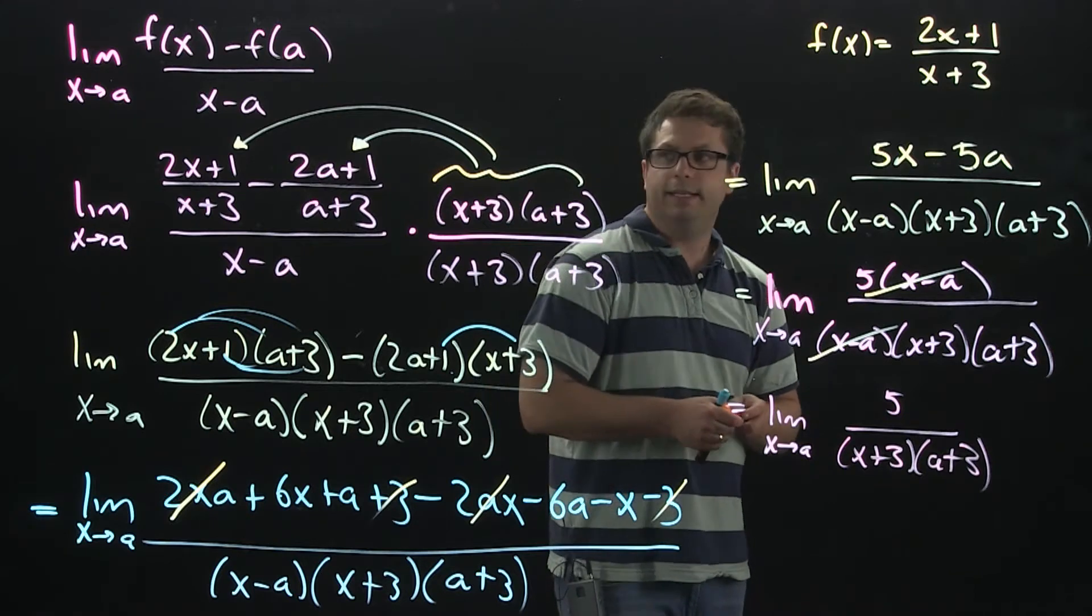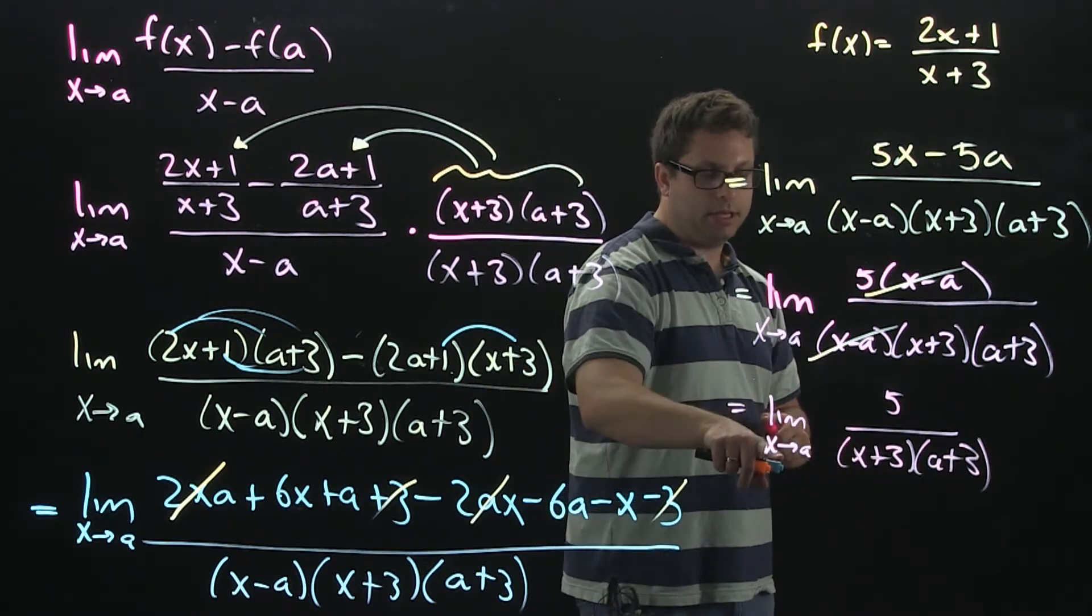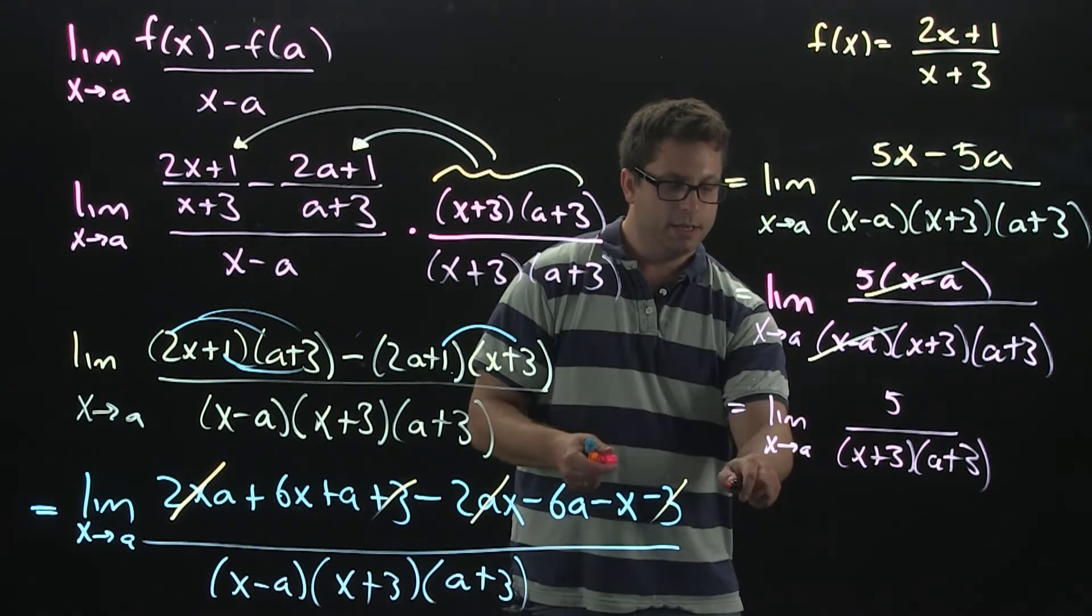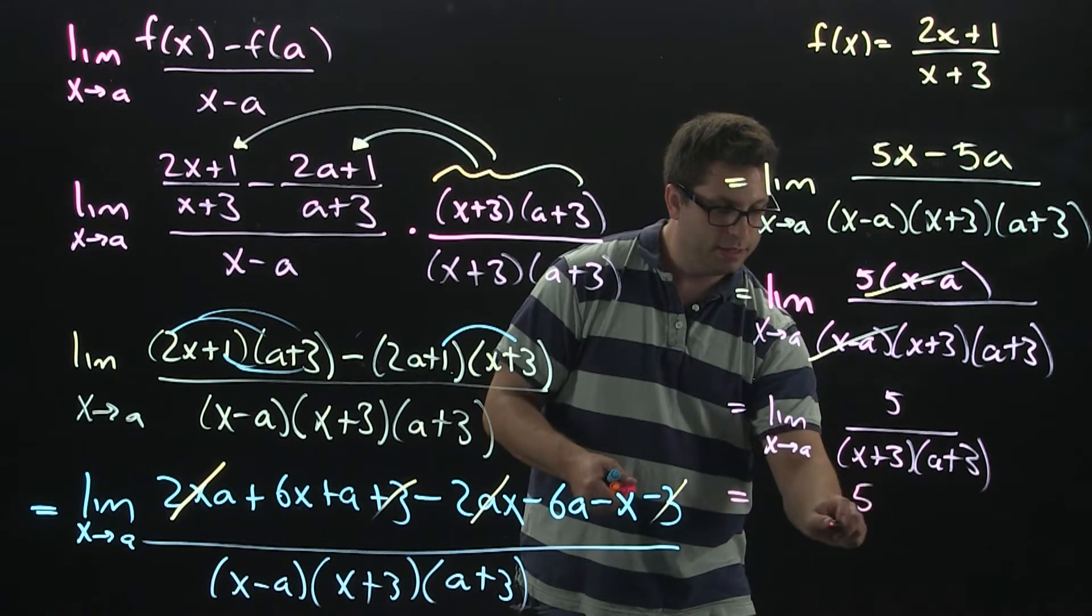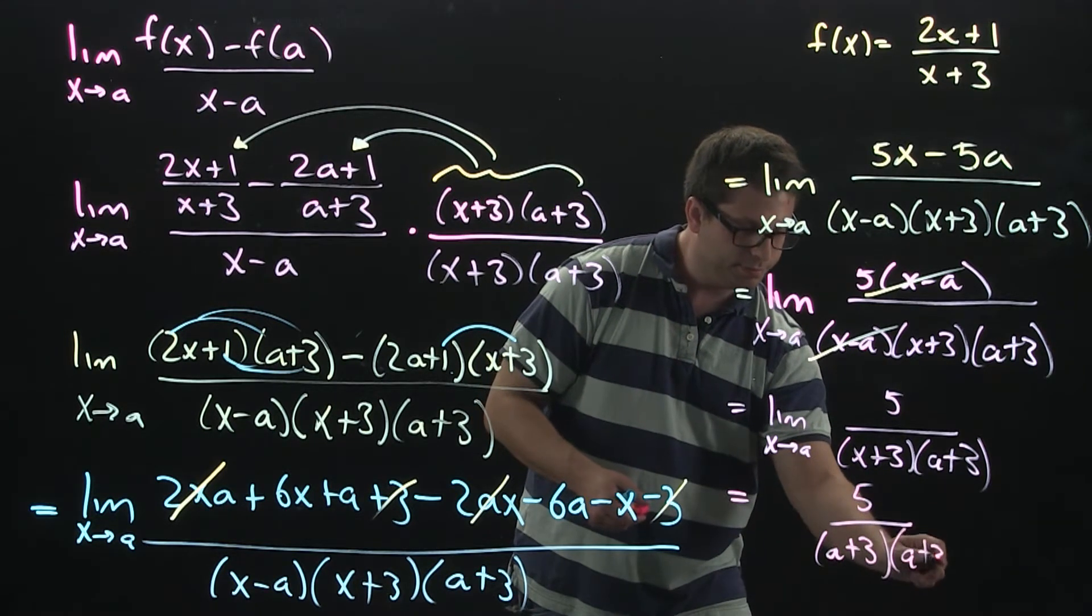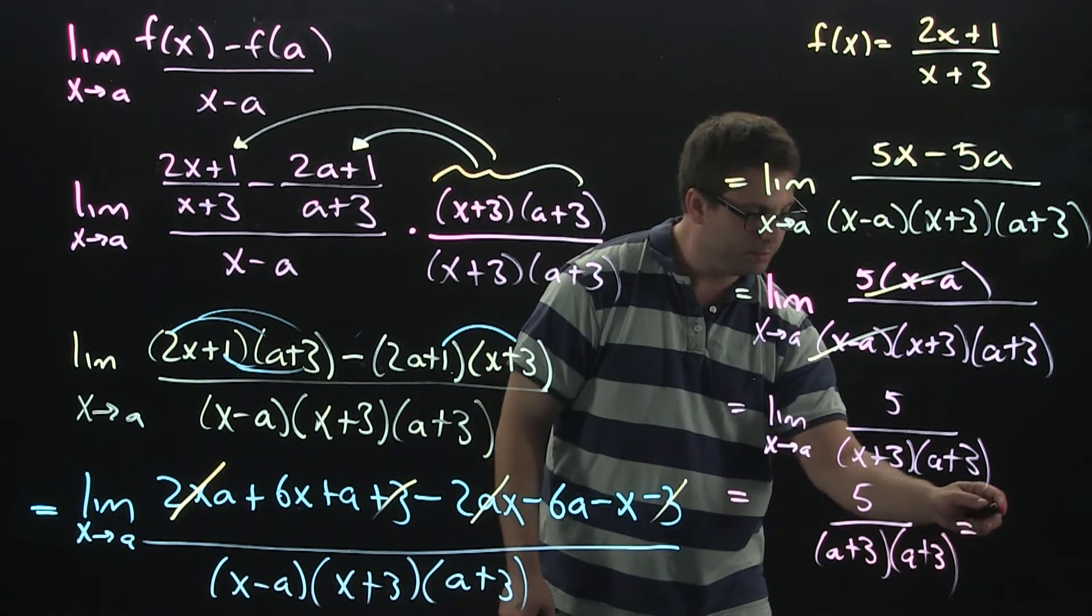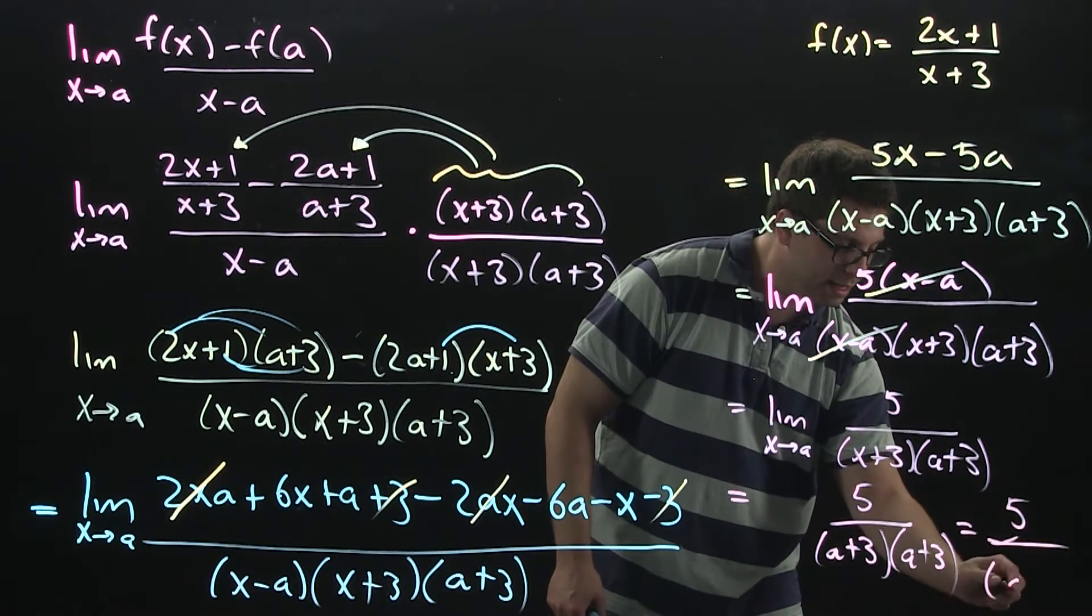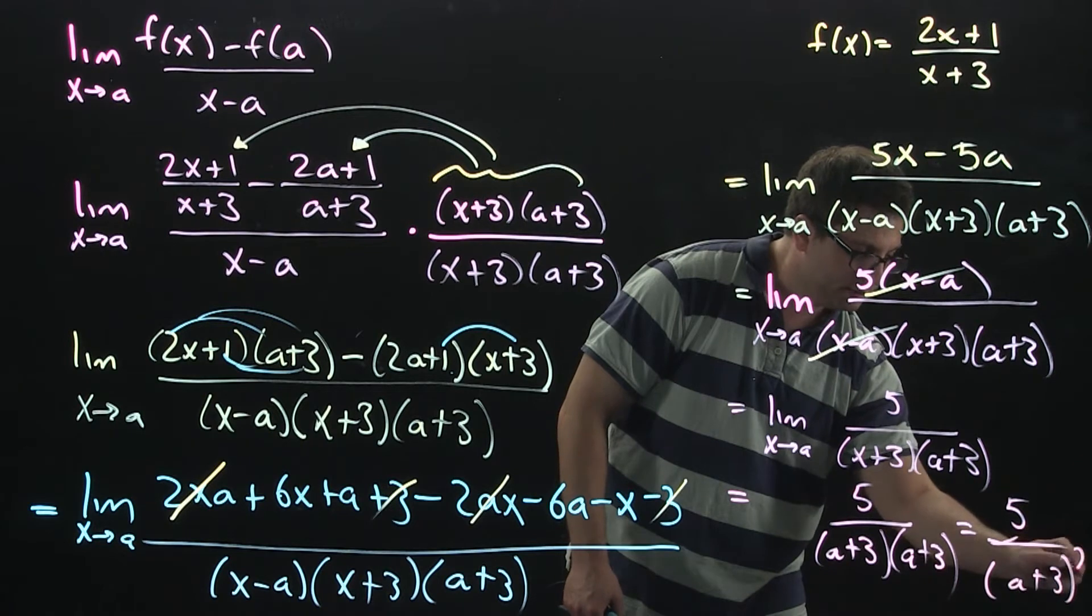At this point, I can now plug in x equals a because I'm not going to make the denominator 0 anymore. And that's going to give me 5. We'll have a plus 3 and another a plus 3. So, this can be simplified. You can leave it like this, but you can rewrite it as a plus 3 squared.